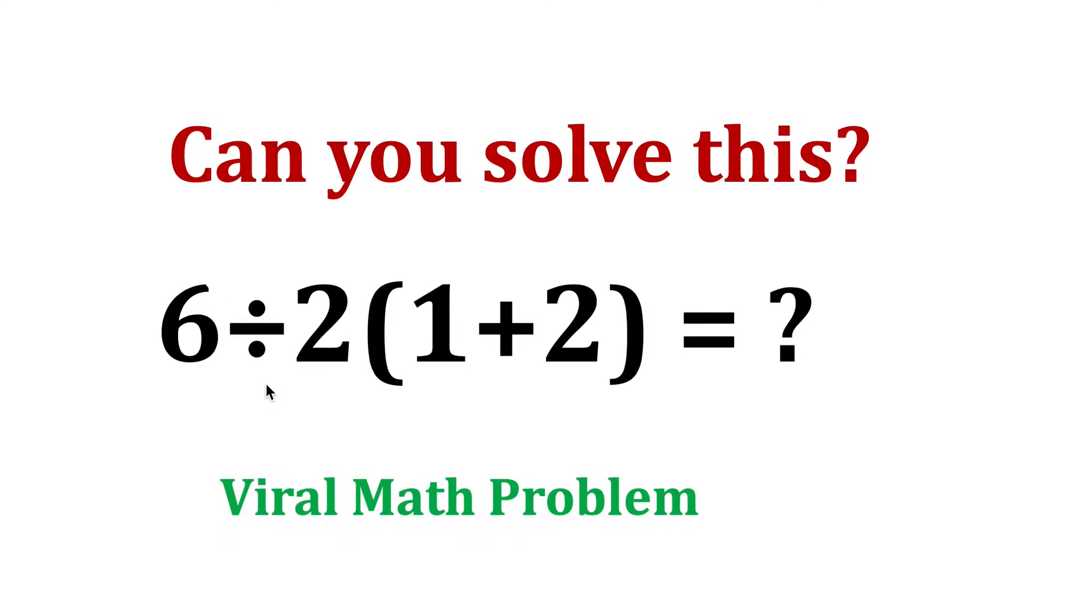So what's so important about this problem? The ambiguity arises from which operation you perform first, whether you multiply this part or you first divide this part. Depending on that, you will get different answers. So let's see what is the correct answer.